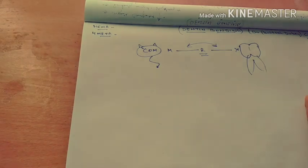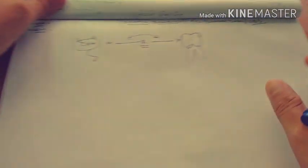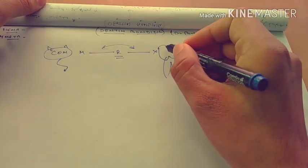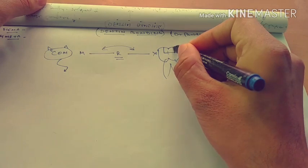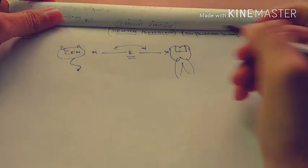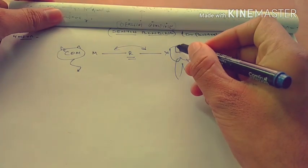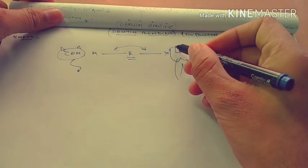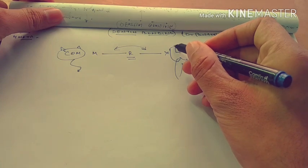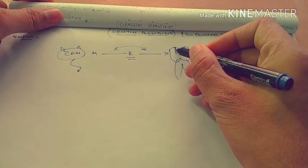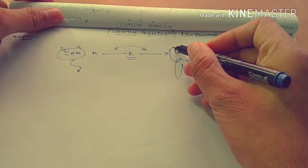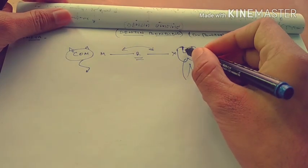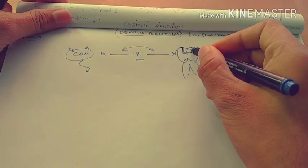Now we are going to the micro level of a tooth preparation. Suppose tooth preparation is done like this, and these are the margins or the line angles — this one being the gingival surface margin. So we are going to etch this surface.